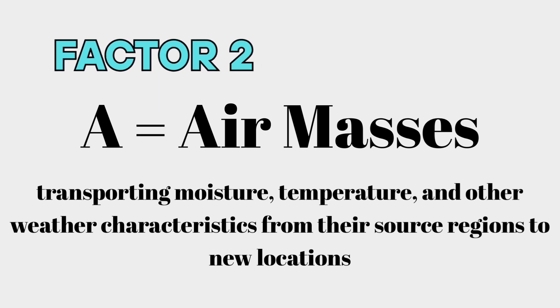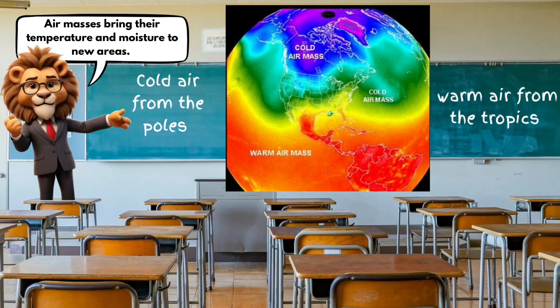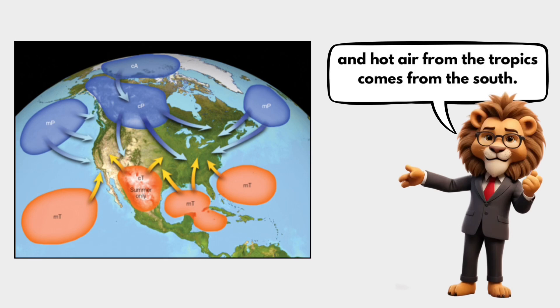Factor two: air masses. Air masses bring their temperature and moisture to new areas — cold air from the poles and warm air from the tropics. These air masses can mix to create different weather patterns depending on where you live. In the northern hemisphere, cold air from the polar regions comes from the north, and hot air from the tropics comes from the south.